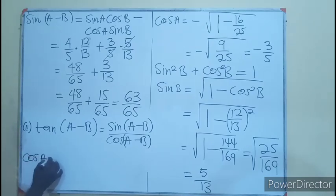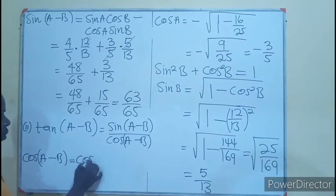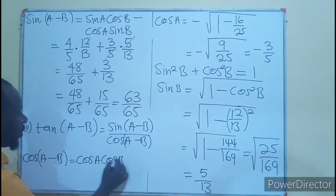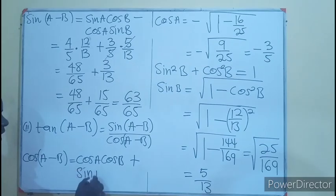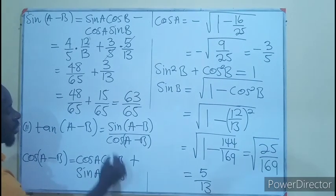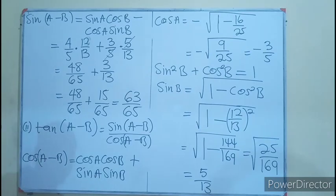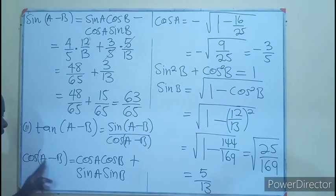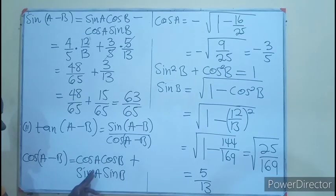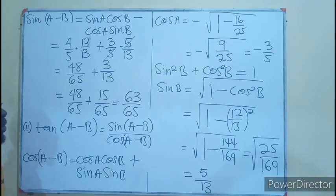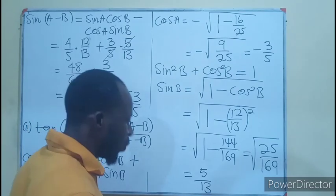Now for cos(A - B). The compound angle formula for cosine is: cos(A - B) = cos A · cos B + sin A · sin B. The minus sign in the argument becomes a plus between the two product terms. So: cos A times cos B, plus sin A times sin B.